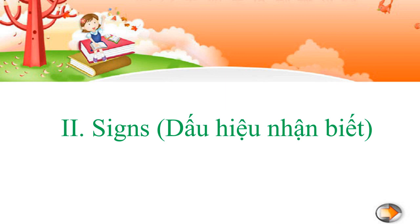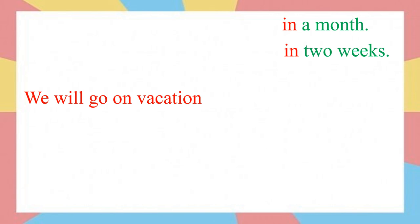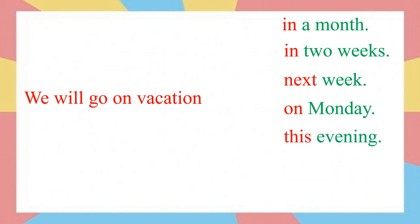Now the very important part: the signs to identify the future tense. For example: 'We will go on vacation...' The time signs may be: in a month, in two weeks, next week, on Monday, this evening, tomorrow, soon, or later. These are signs that tell you the sentence uses the future tense.